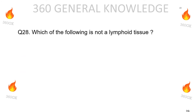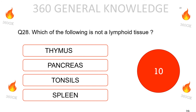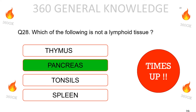Which of the following is not a lymphoid tissue: thymus, pancreas, tonsils, or spleen? The correct answer is pancreas.